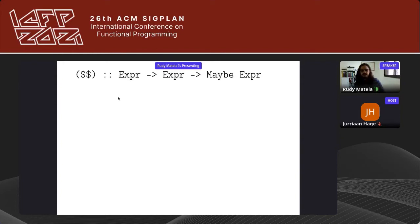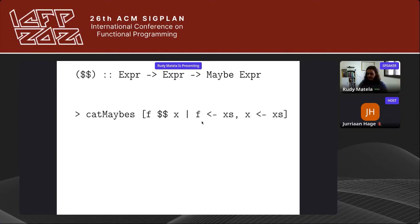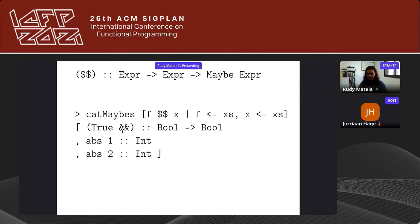Express also provides the double-dollar ($$) operator, which applies two expressions and always returns a type-correct expression, or Nothing when the types do not fit together. Here's an example: taking f values and x values from the previous list and running f $$ x, then concatenating the Just values. We get and applied to True, abs applied to 1, and abs applied to 2.